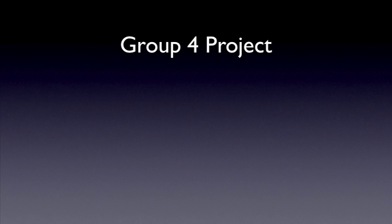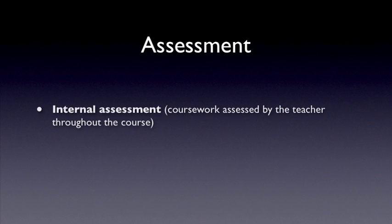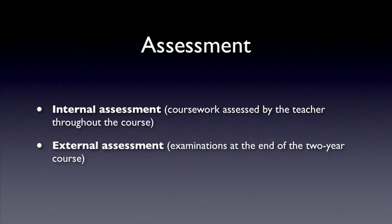The Group 4 project is a 10-hour project on a scientific or technological topic that involves students from all Group 4 subjects. The student's assessment has two components: internal assessment, which refers to the coursework assessed by the teacher throughout the course, and external assessment, which refers to the official IB examinations taken at the end of the two-year course.